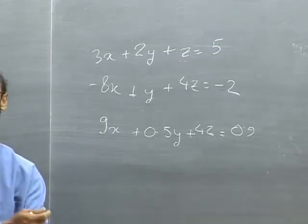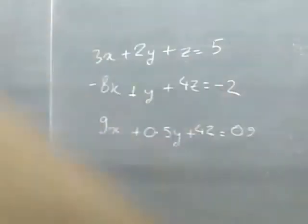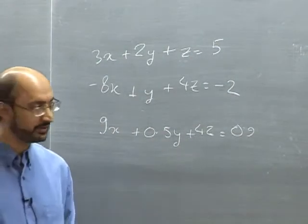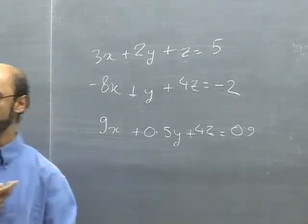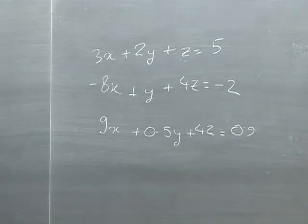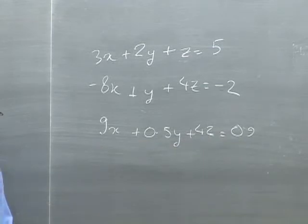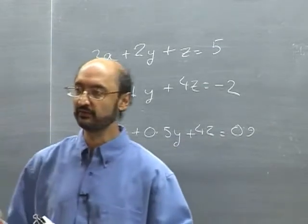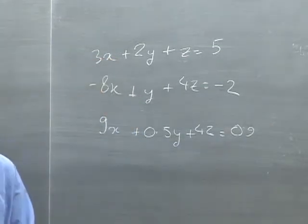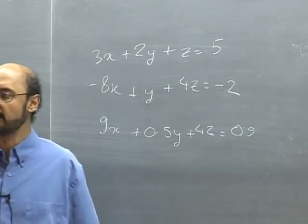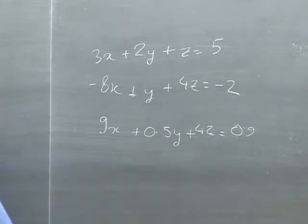There is a whole field called linear optimization where we have not four or five but a hundred thousand, two hundred thousand, or a million equations. When you have a million equations you still need to solve them and find values that are consistent. In optimization you want to find values that maximize a certain objective function. I'll give you a hint of where these kinds of equations come from.